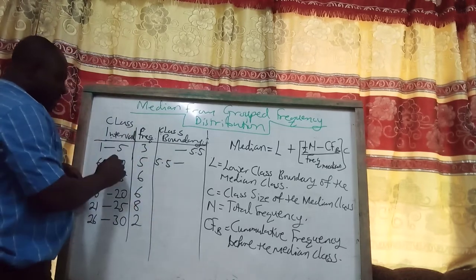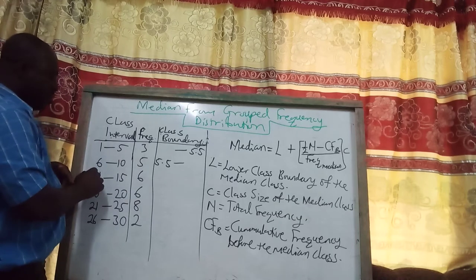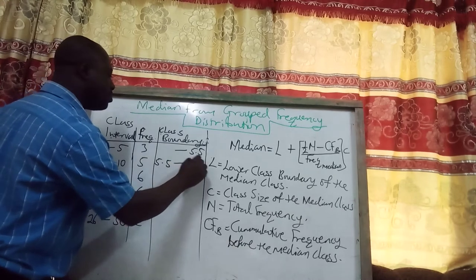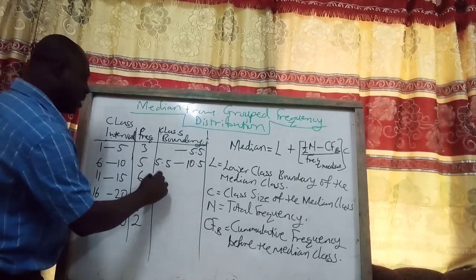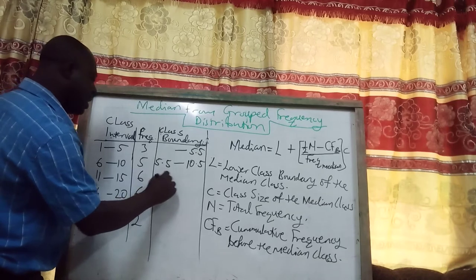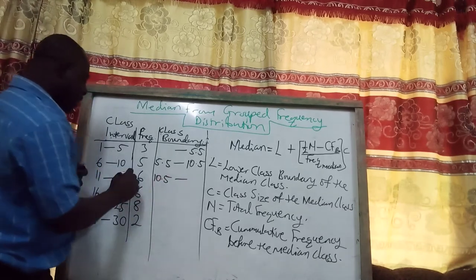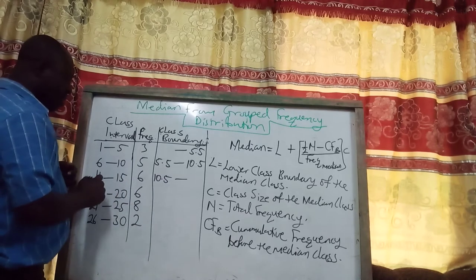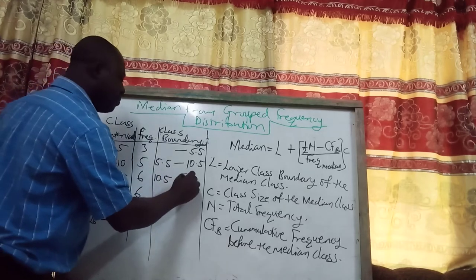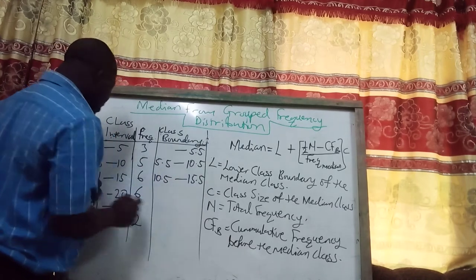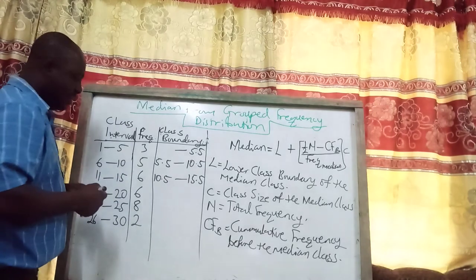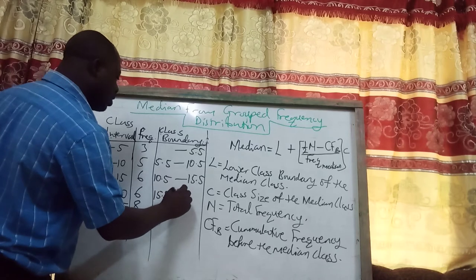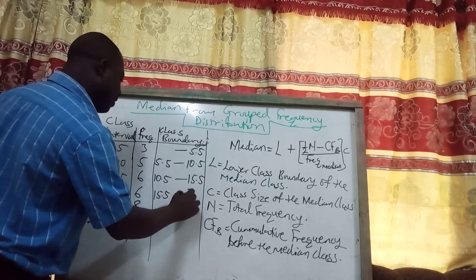For the next interval: 10 plus 11 equals 21, divided by 2 gives 10.5. That 10.5 becomes the lower class boundary for the next class. Then 15 plus 16, halfway is 15.5. Because all intervals are the same size, the boundaries continue in that format.